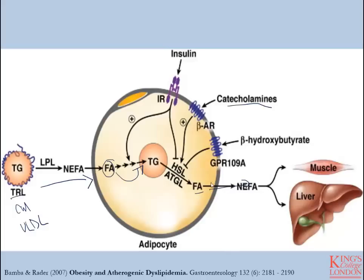Processes which inhibit this from occurring are the buildup of products of beta-oxidation, such as beta-hydroxybutyrate, as well as insulin, which has anabolic effects thereby promoting adipocytes to store energy as opposed to liberating it.